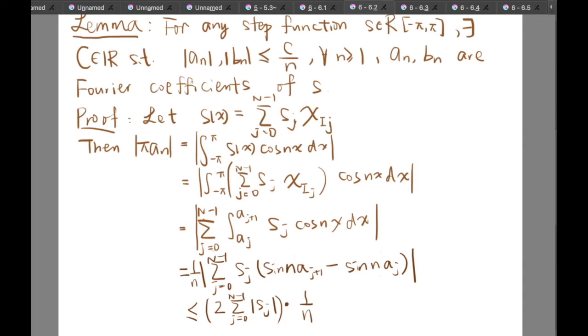And the second line here, we just copy this thing down here and apply the definition of the χ, we get that it is equal to the sum from j=0 to n-1 of the integral from aⱼ to aⱼ₊₁ of the function Sⱼcos(nx)dx. And after computing this integral we get that it is equal to 1/n times the absolute value of the sum from j=0 to n-1 of Sⱼ times [ψₙ(aⱼ₊₁) - ψₙ(aⱼ)]. And applying the triangle inequality we get that it is equal to 2 times the sum from j=0 to n-1 of |Sⱼ| times 1/n.